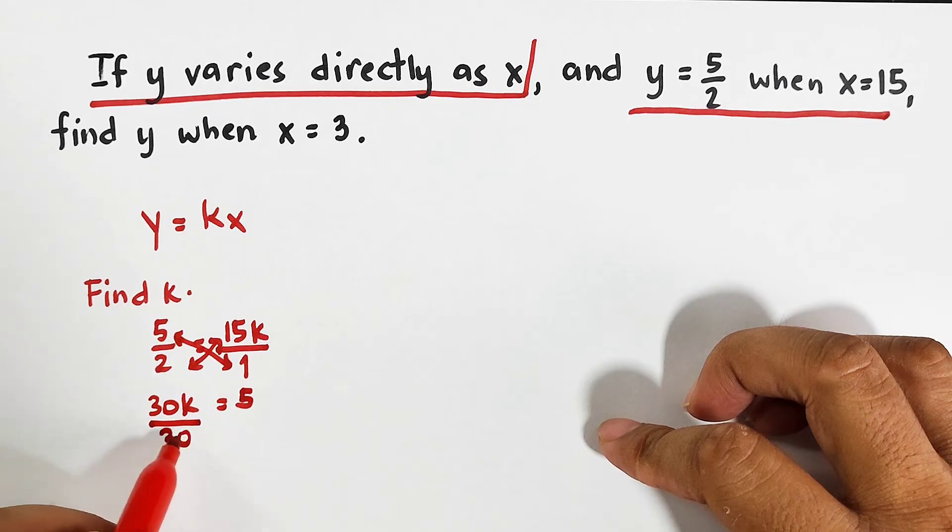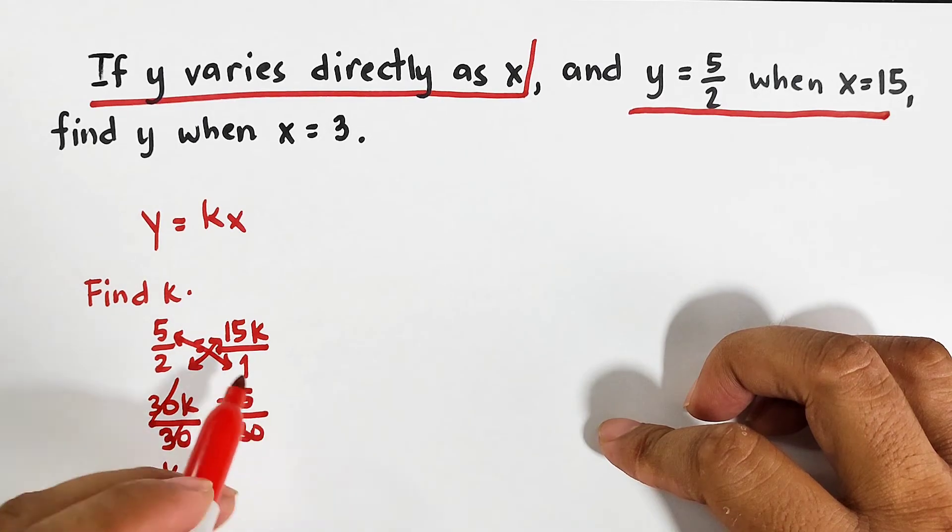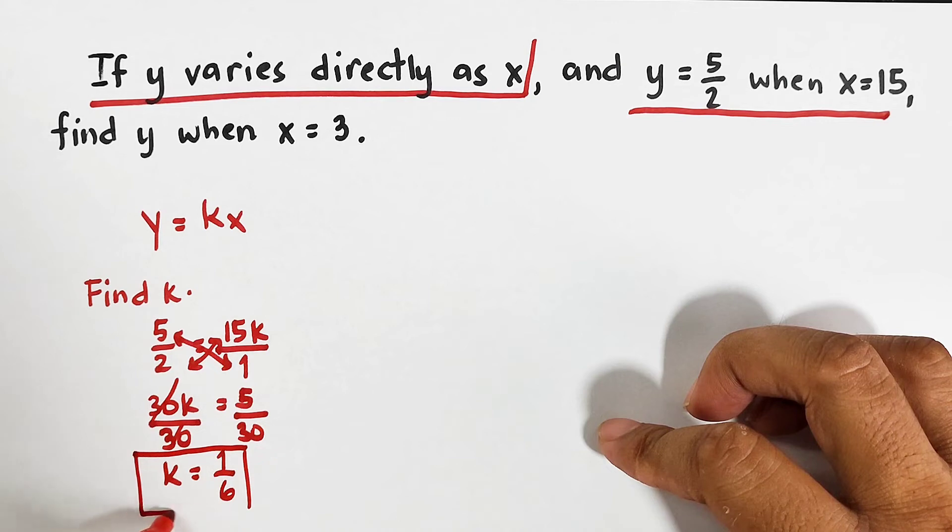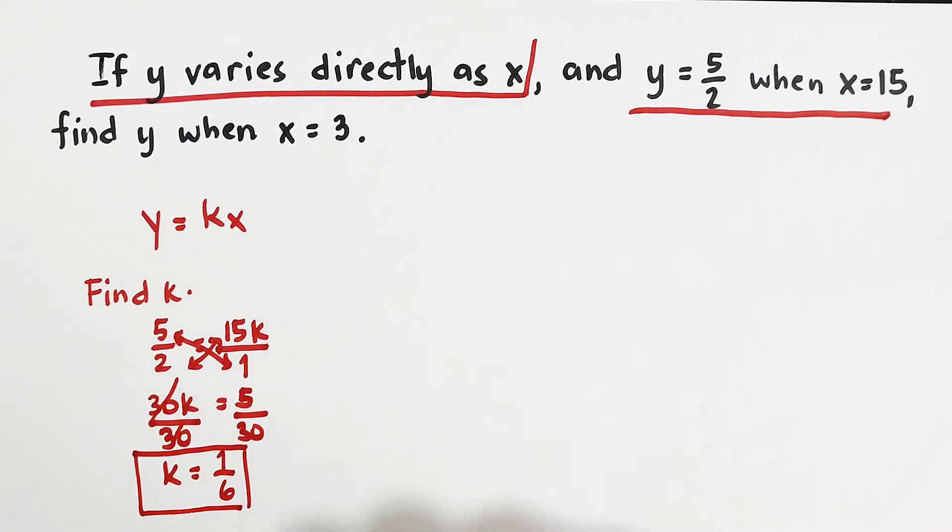And to find the value of constant k, divide by 30, divide by 30, cancel, cancel, your k is 1 over 6. We can simplify 5 over 30 as 1 over 6. Now let's continue.